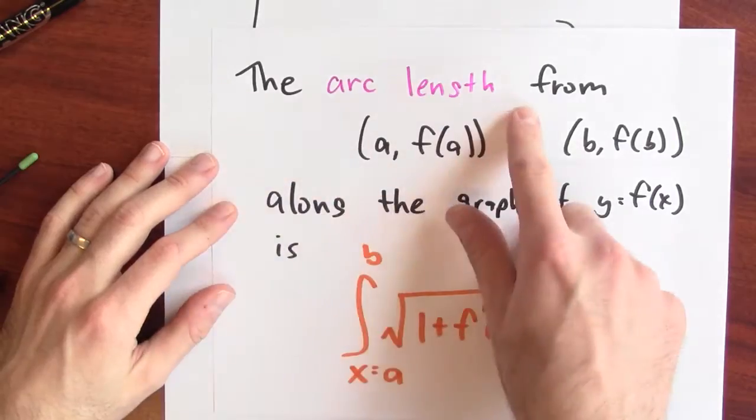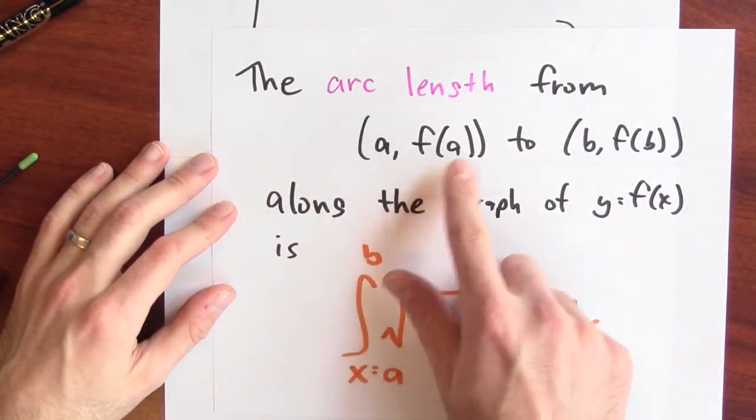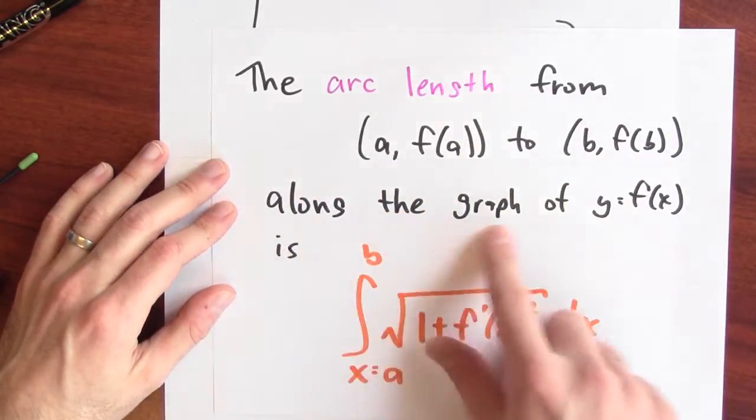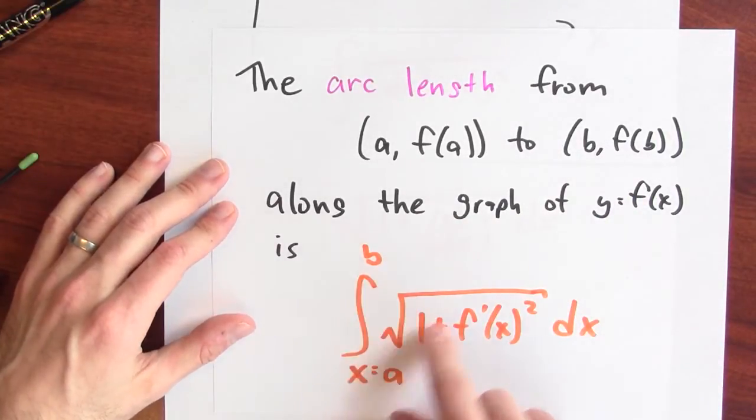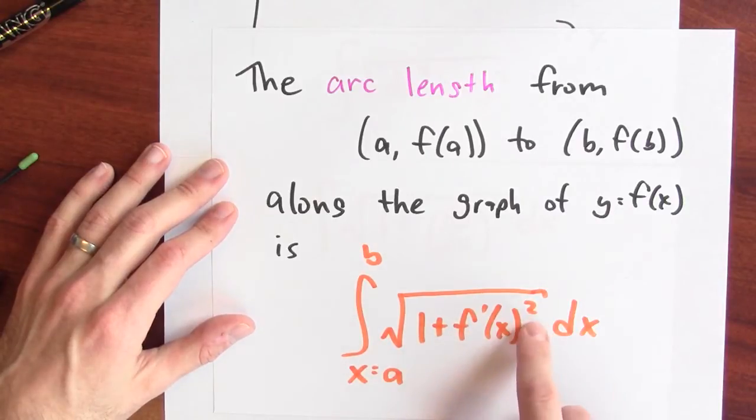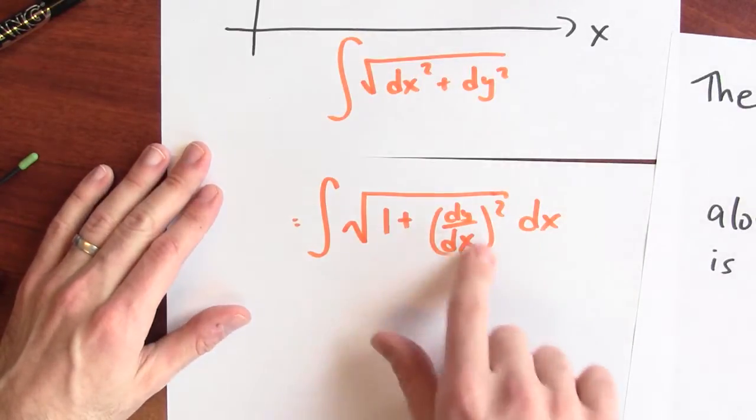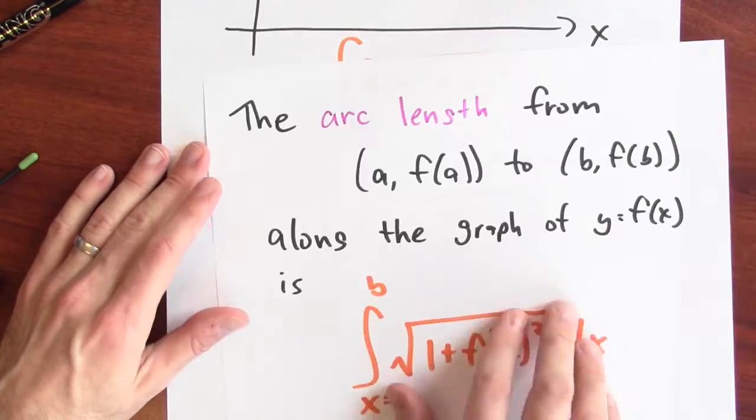So here's the formula that we're going to use. The arc length from a f of a to b f of b along the graph of f is the integral x goes from a to b of the square root of 1 plus the derivative squared, right? That's exactly what I saw here. dx.